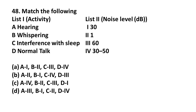Question 48: Match the following activity with noise level. Noise level is measured in decibels (dB). A: Hearing — 30 dB; B: Whispering — 1 dB; C: Interference with sleep — 60 dB; D: Normal talk — 30 to 50 dB. The right matching is Option A. Please remember these noise level values.